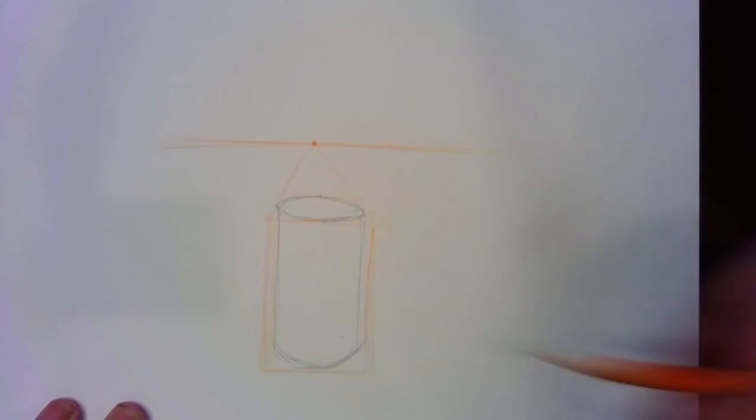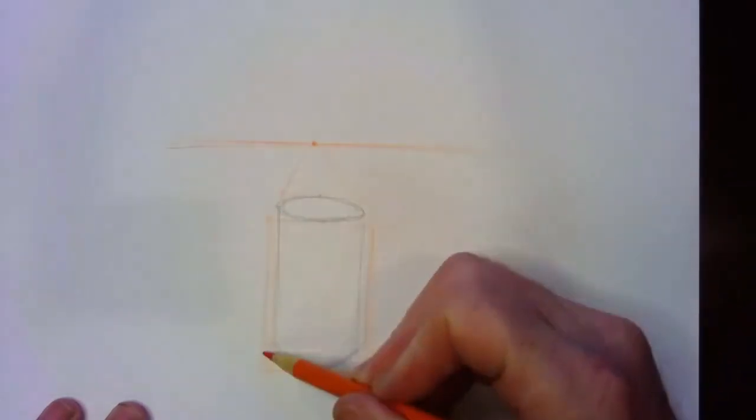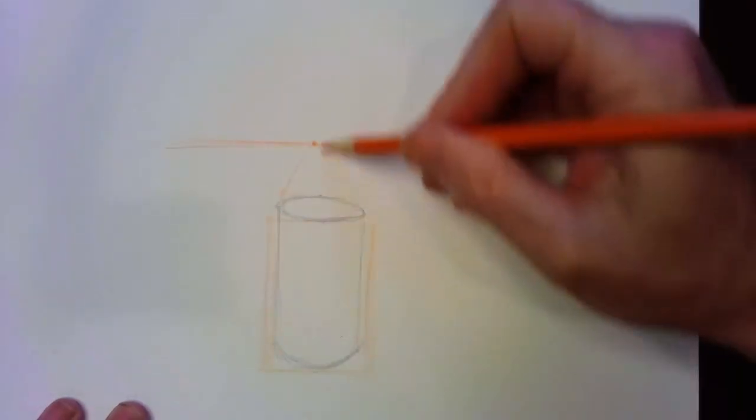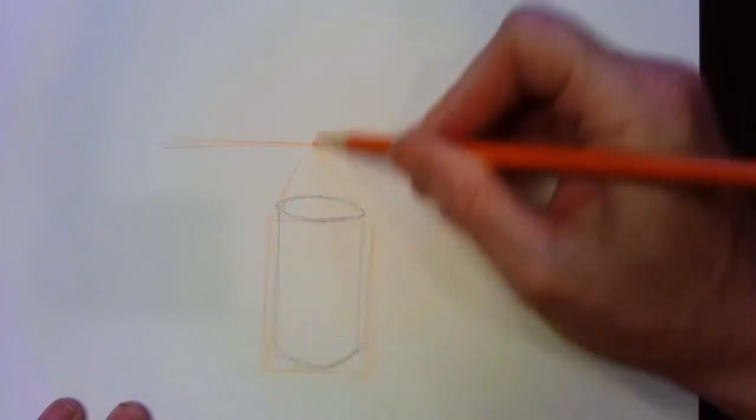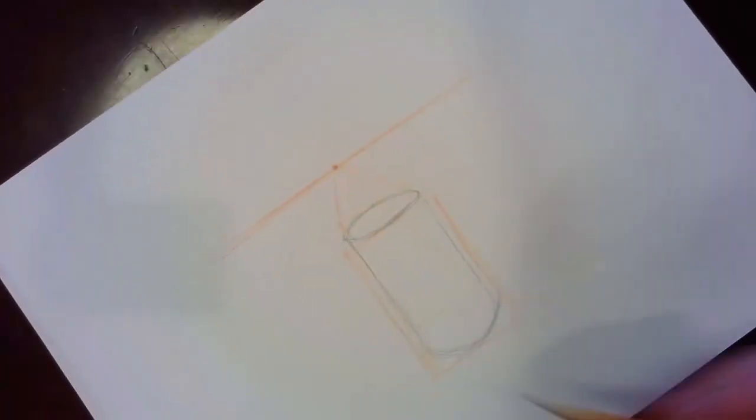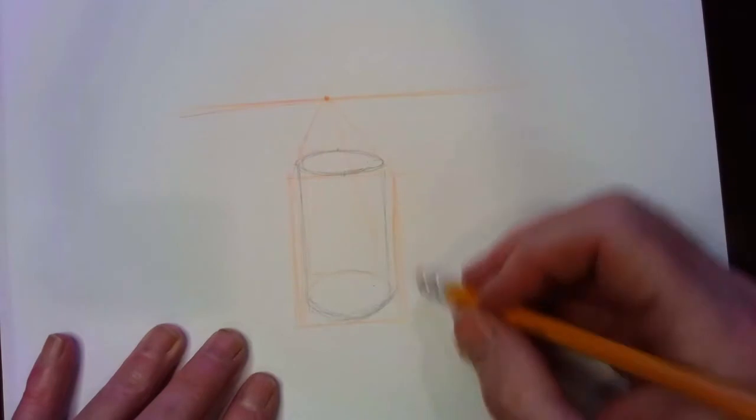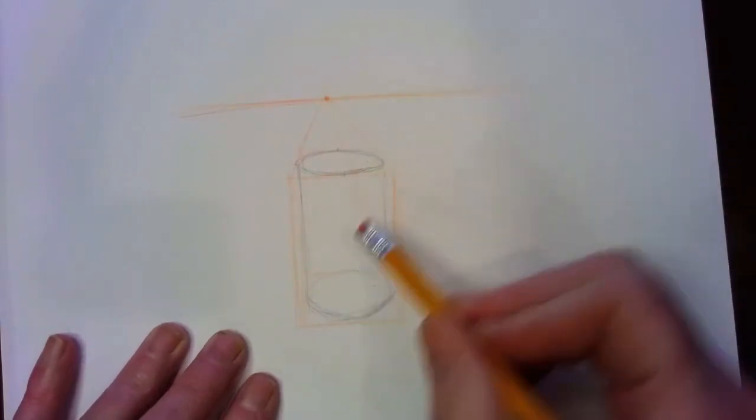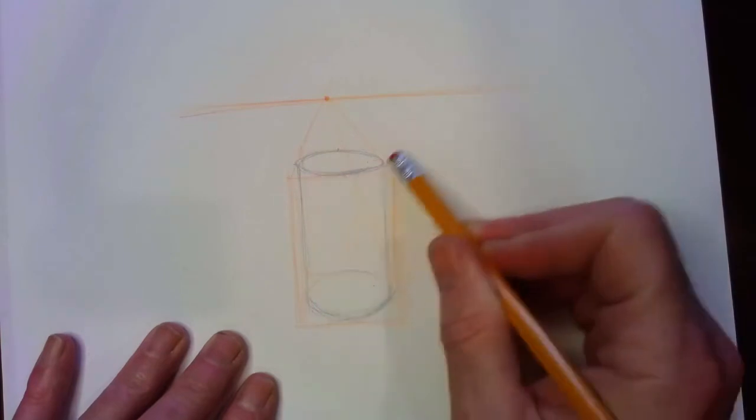If I were to draw out that cube all the way, you'll notice that it comes way out here. So that sphere would kind of come something like that if I were able to see through it. You can see that the oval at the bottom is much bigger than the oval at the top.